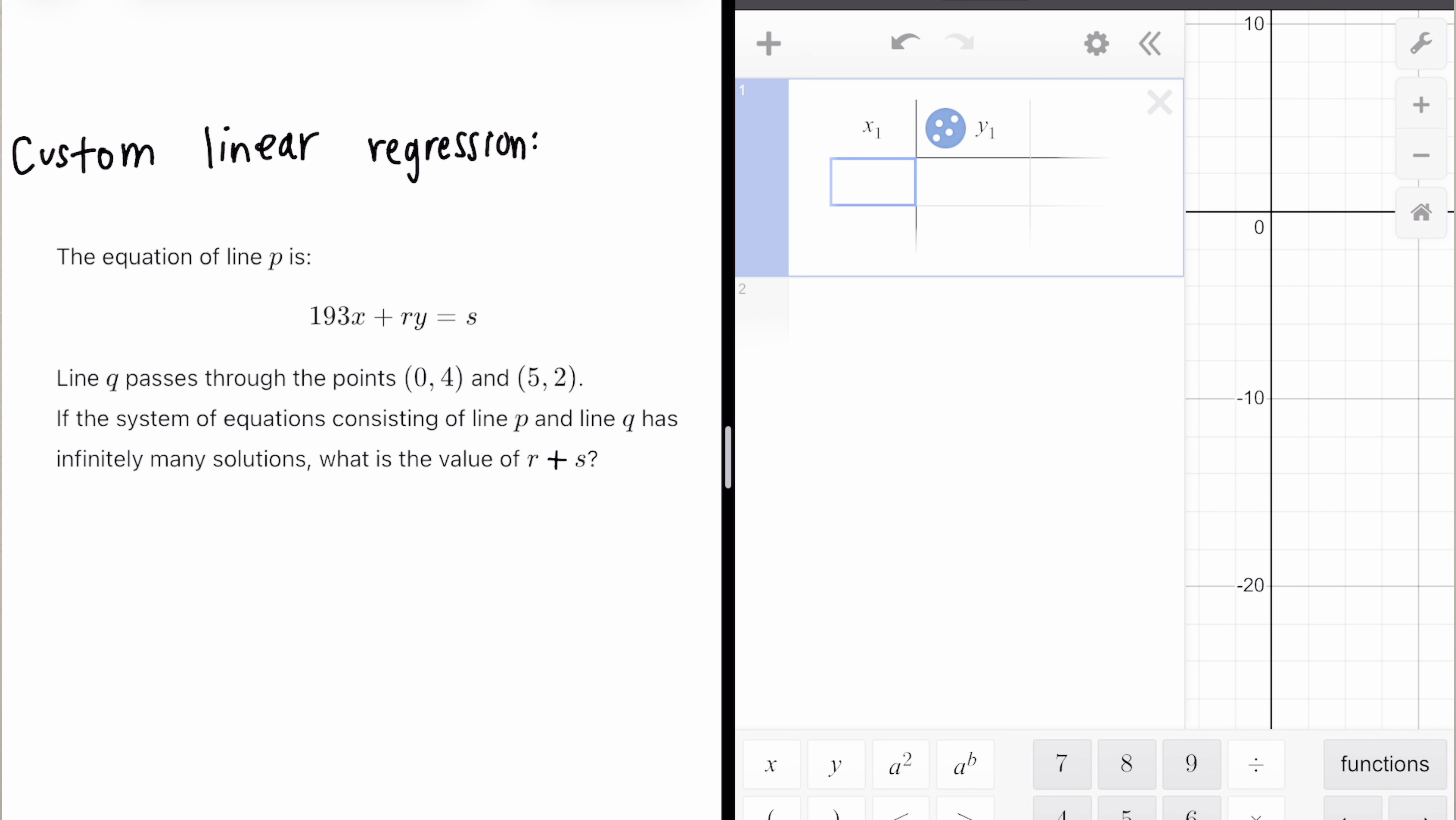Again, same first step for any sort of regression. We add a table plus table. Now go ahead and input our given points, 0, 4 and 5, 2.